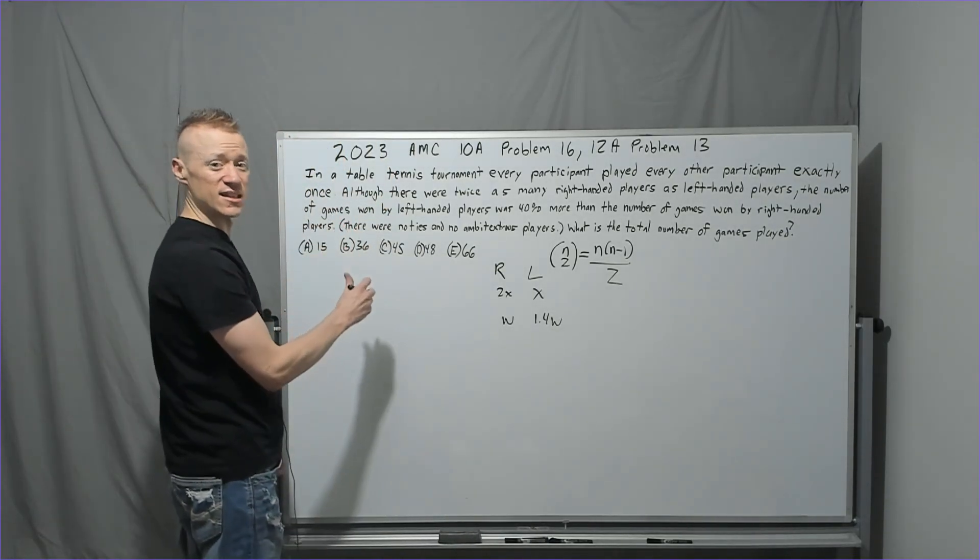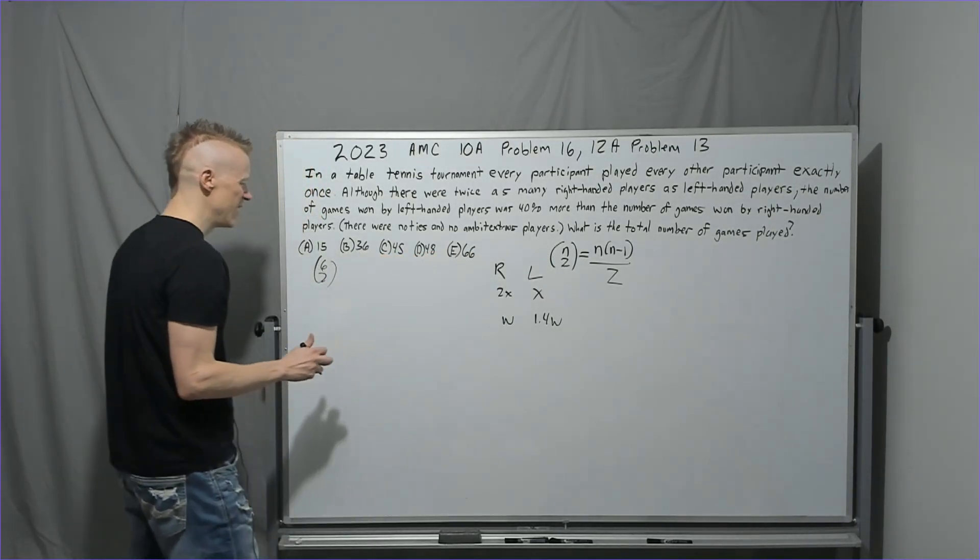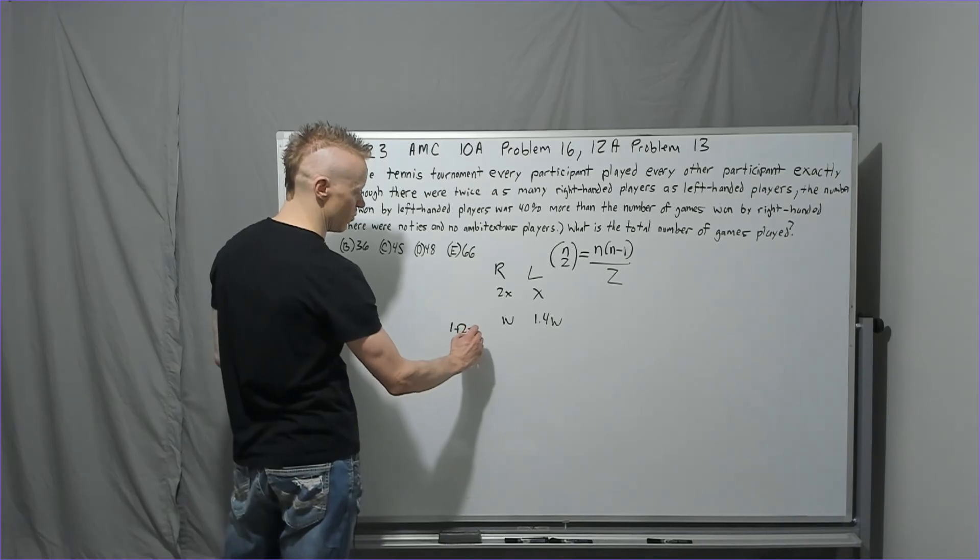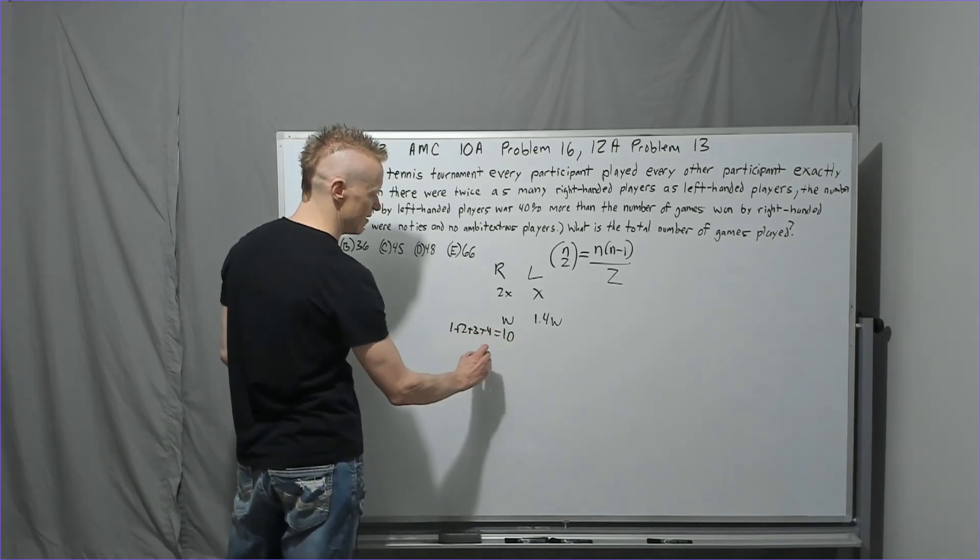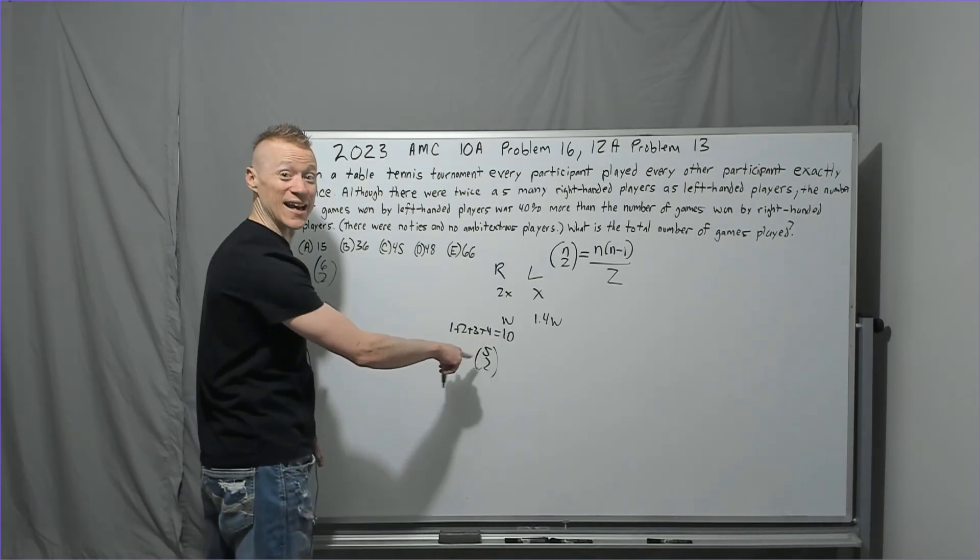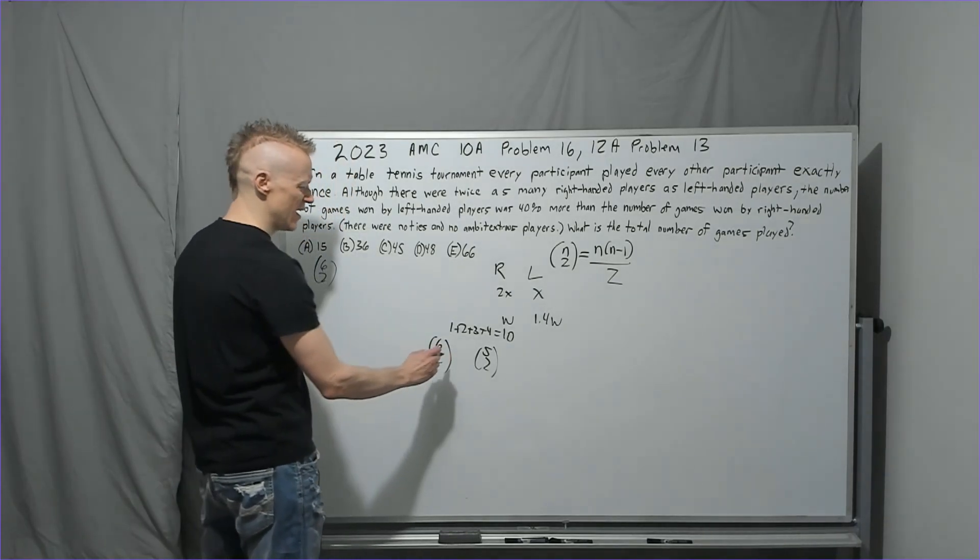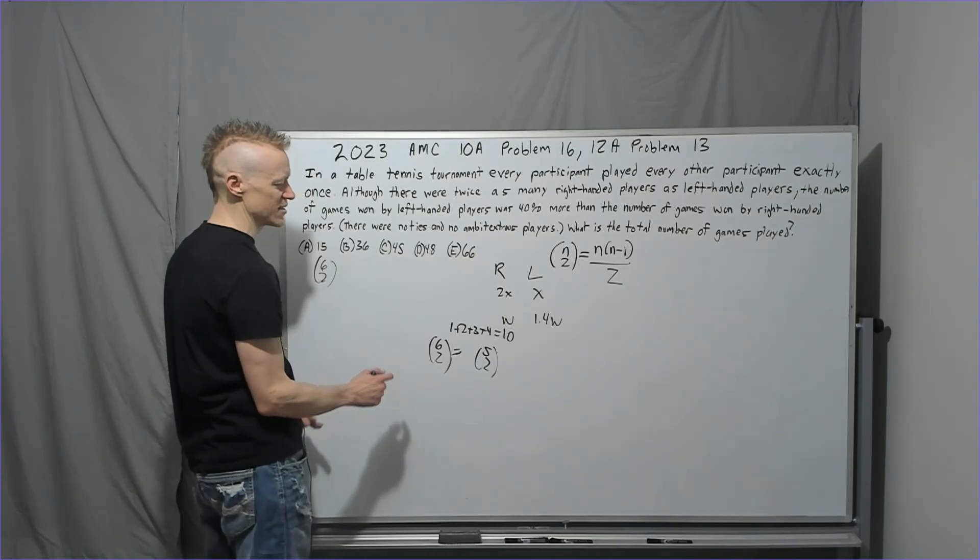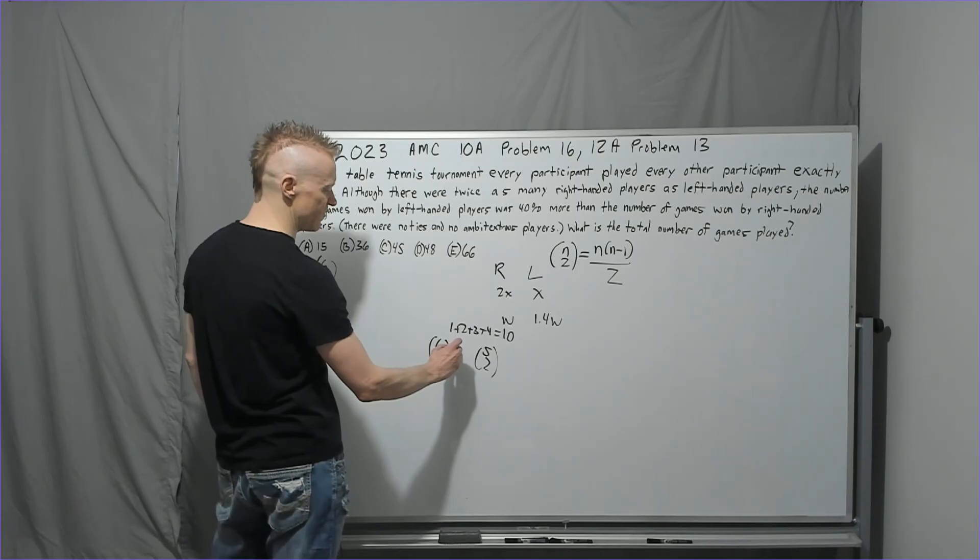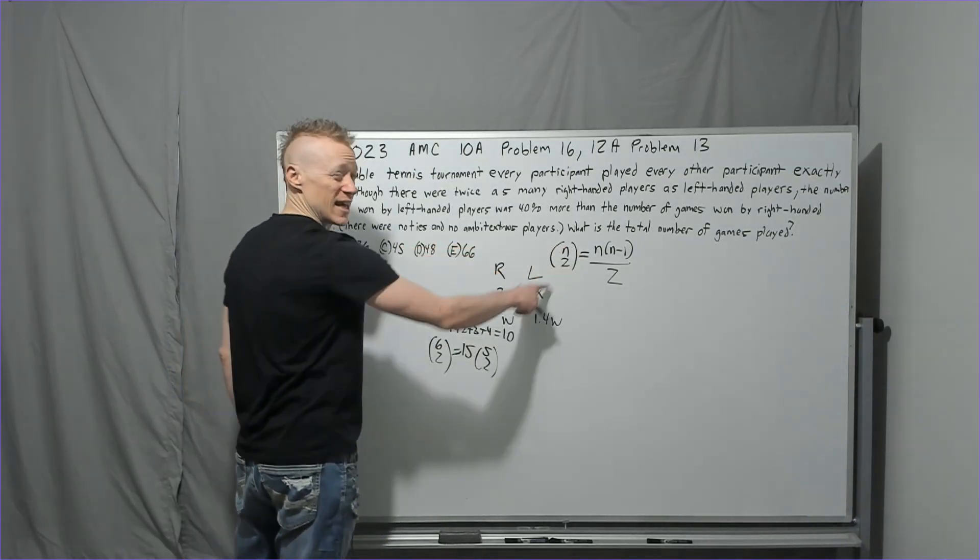Okay, so how do you do it? 15 is 6 choose 2. How do I know? You should have a lot of these memorized for the early ones. They're actually going to be equivalent to the triangular numbers. So the triangular numbers like 1 to 4 is 10, but that's also 5 choose 2. 6 choose 2 is when you take this and add a 5 to it. So this will be 15.